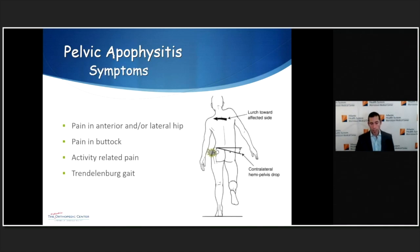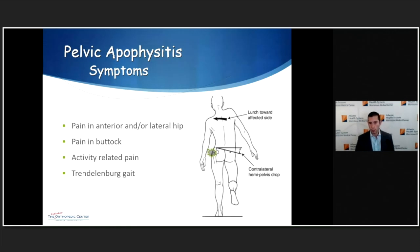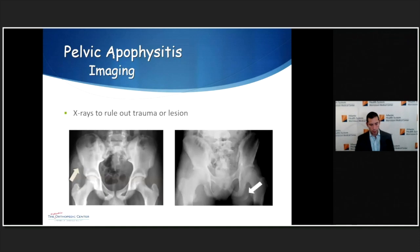Patients typically complain of pain in the anterior or lateral hip with iliac or ASIS apophysitis, or buttock pain with ischial involvement. The pain is generally activity-related. You may also see a classic Trendelenburg gait due to hip weakness. Since it's unilateral, I'll usually get x-rays of the pelvis to rule out trauma — such as an ASIS avulsion on the left or an ischial avulsion on the right.